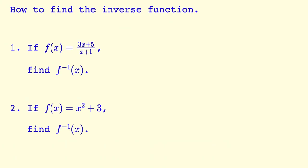Let's get started. To find the inverse function of f of x, our first step is to set f of x equal to y. Step two is going to swap x and y. The third step is we're going to isolate and solve for y.